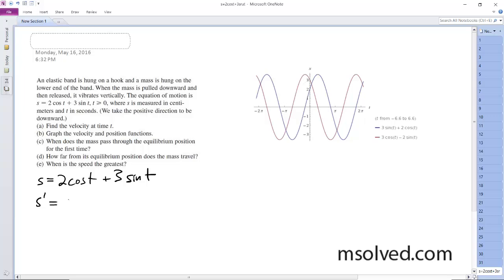S prime is going to be equal to, well, reversing these so they end up being positive 3 cosine t minus 2 sine t.